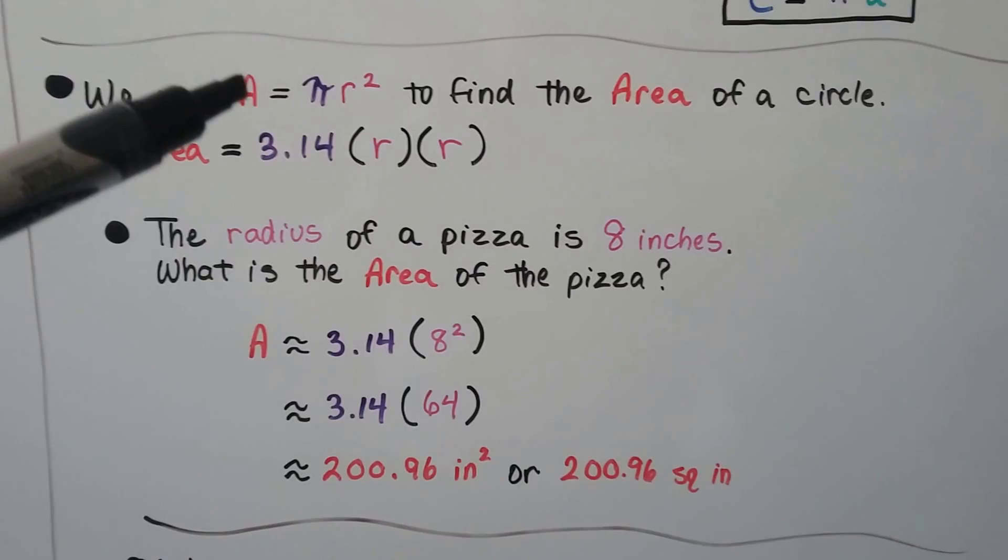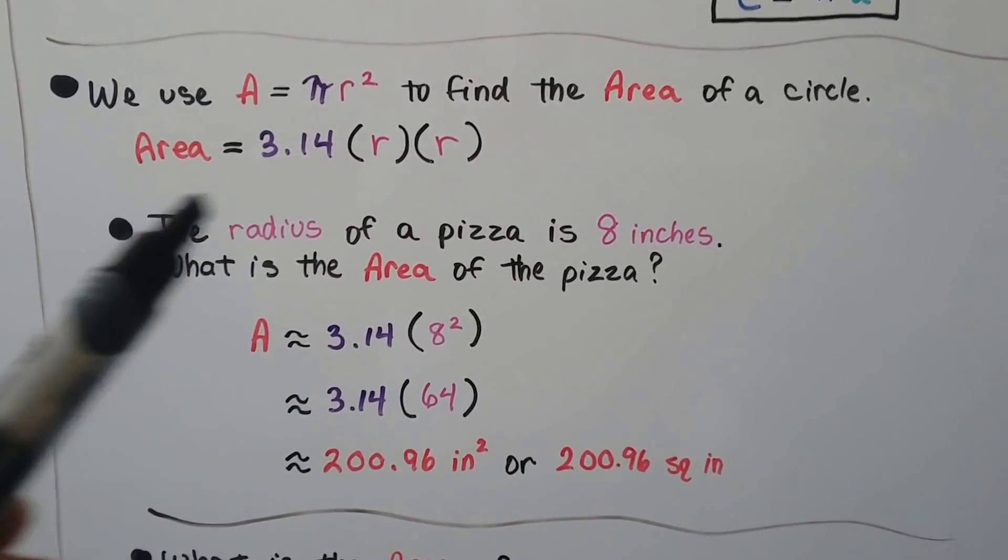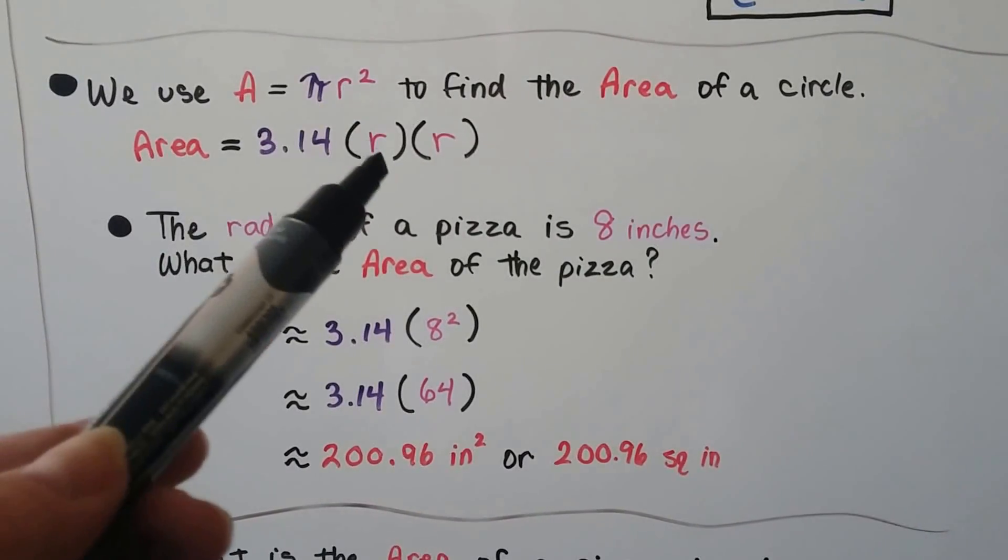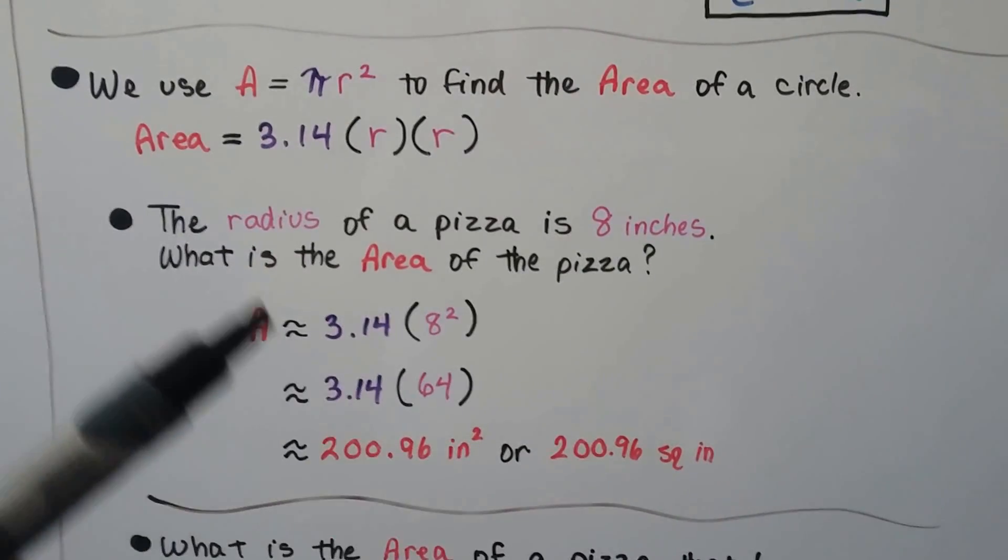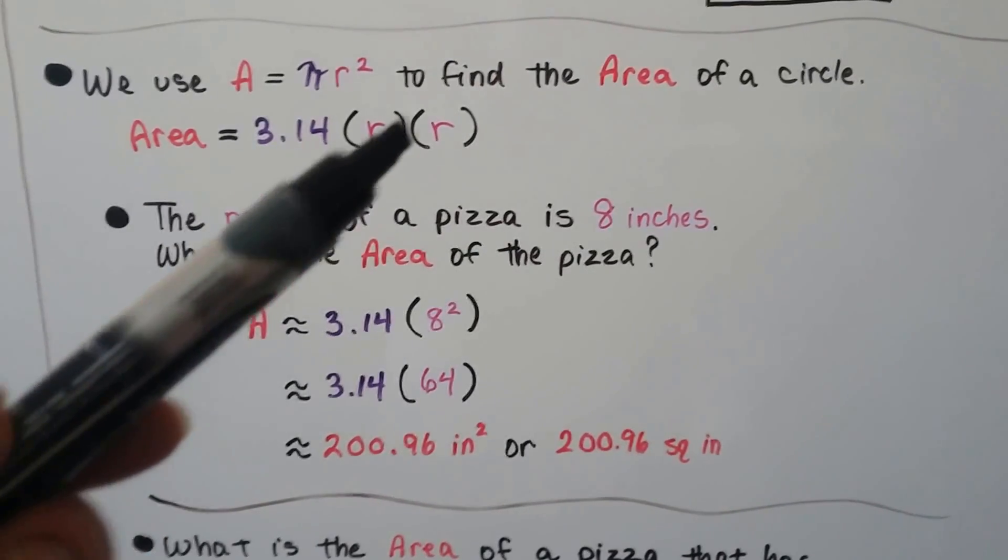we use area, we use a equals pi r squared to find the area of a circle. So that means when you see r squared, it means r times r, doesn't it? So we're going to do 3.14 for pi, and then r times r, the radius times the radius.